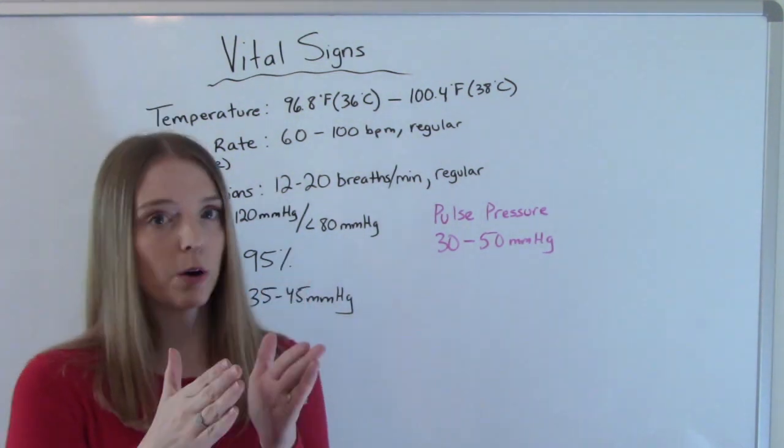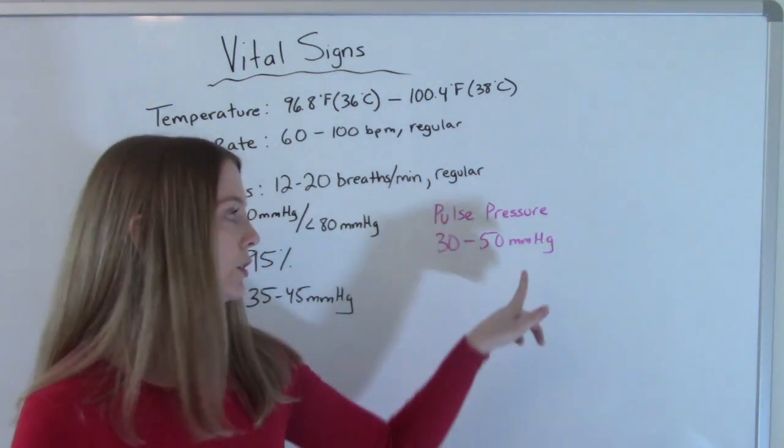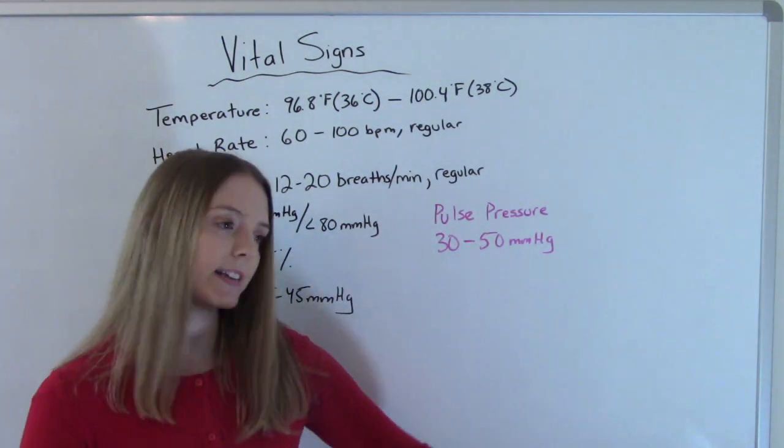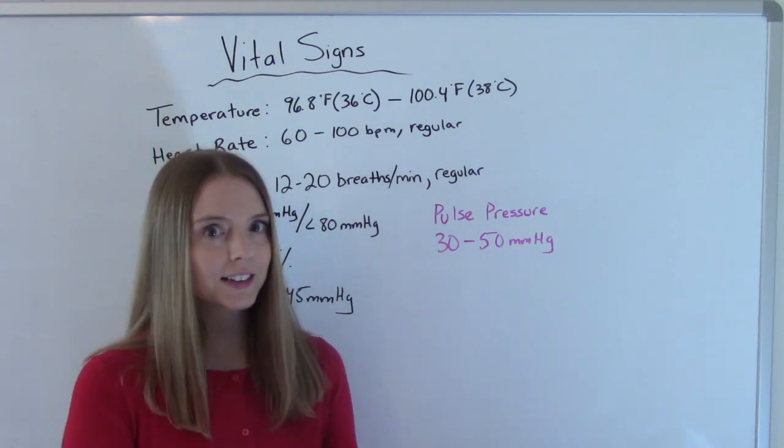Having what's called a narrow pulse pressure, so less than 30, or a wide pulse pressure, which is greater than 50, could be indicative that they're having some sort of heart problem. So that does matter. That is important.